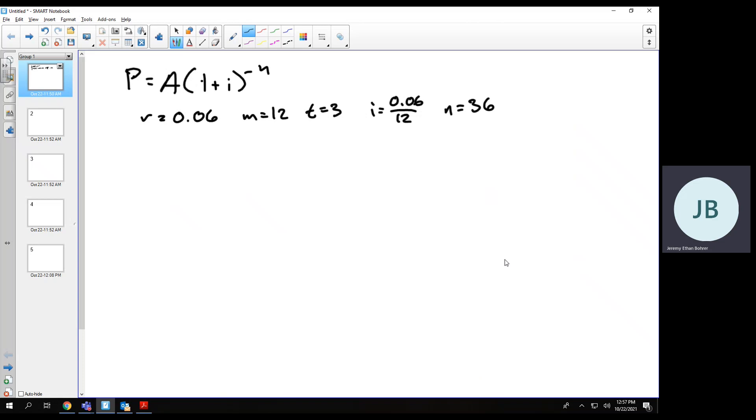So we plug in these values. Oh, and A is 20,000. So P equals 20,000 times 1 plus 0.06 over 12 raised to the negative 36th power. That comes to approximately $16,713.